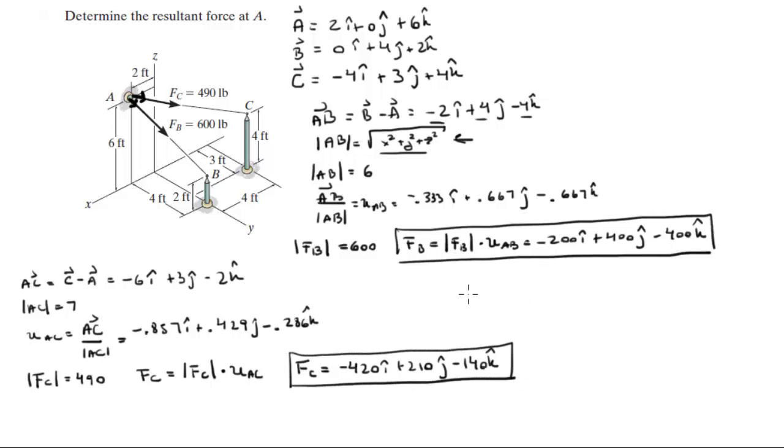And the resultant force is found by adding FC plus FB. So basically you add the X with the X, the Y with the Y, and the Z with the Z. And you get FR to be negative 620i plus 610j minus 540k.